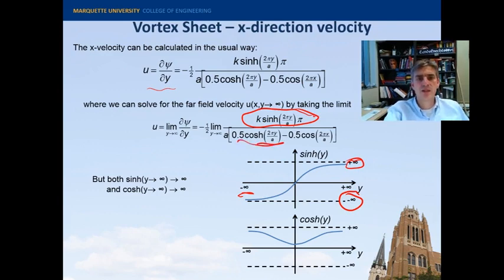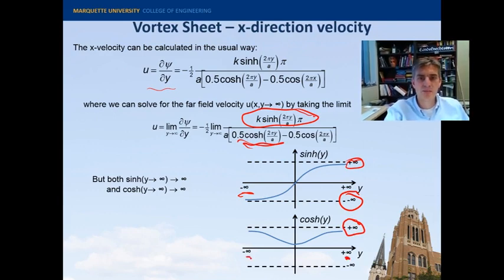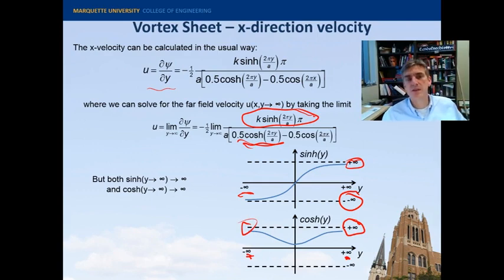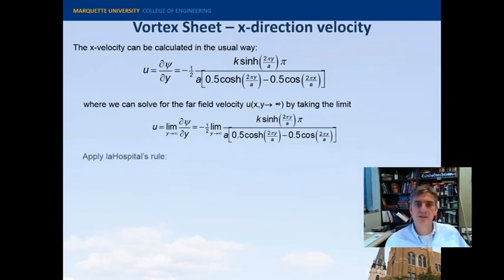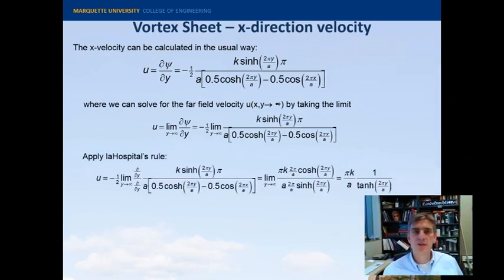Hyperbolic cosine does pretty much the same thing. It also asymptotes to infinity in the plus direction, and in the minus direction, it asymptotes to negative infinity. So the top and the bottom, the numerator and the denominator of this function, are going to infinity. So we'll use L'Hopital's rule and see if we can't fix this. So I apply L'Hopital's rule. I take the derivative with respect to the variable that is causing this thing to go to infinity, and that's y. So I take the derivative with respect to y, and then I have that written here.